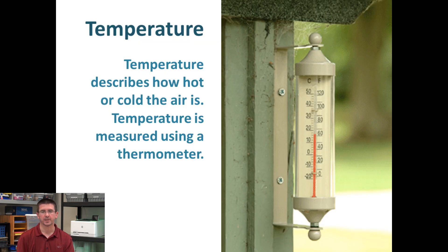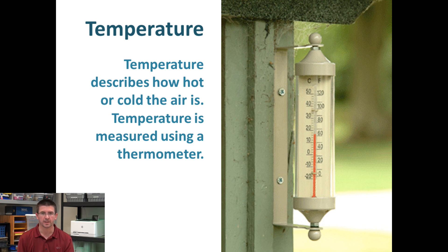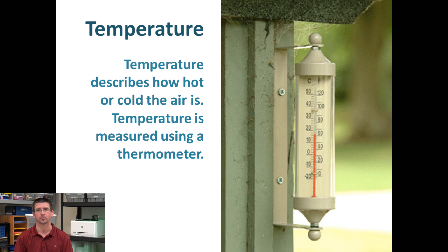The first thing we can measure is temperature — one that everybody's probably very familiar with, just looking at a thermometer to see what the temperature is outside. We measure temperature in degrees. In America we use the Fahrenheit scale; most countries use the Celsius scale. The device we use for that is a thermometer. There are digital thermometers and then there are the older ones with mercury or alcohol in them, where it rises and expands upward as the temperature increases.